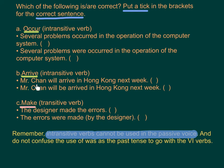B) Verb: 'arrive' (intransitive). Correct: 'Mr. Chan will arrive in Hong Kong next week.' Incorrect: 'Mr. Chan will be arrived in Hong Kong next week.' C) Verb: 'make' (transitive). Both forms are correct: 'The designer made the errors.' and 'The errors were made by the designer.'